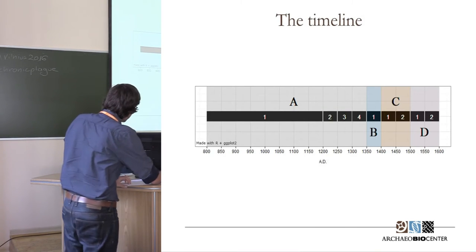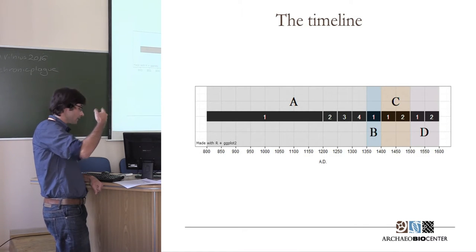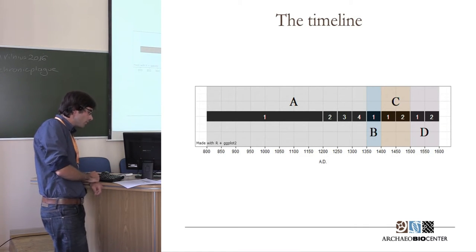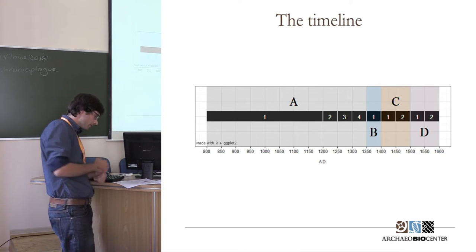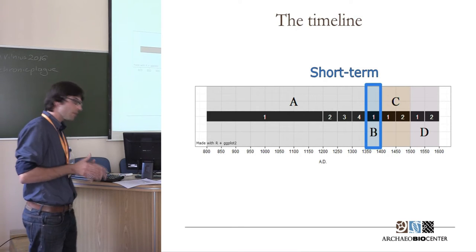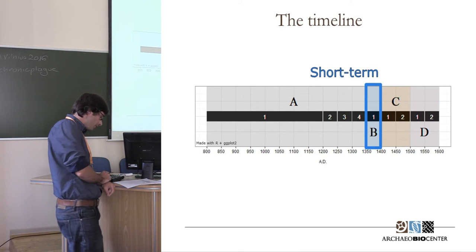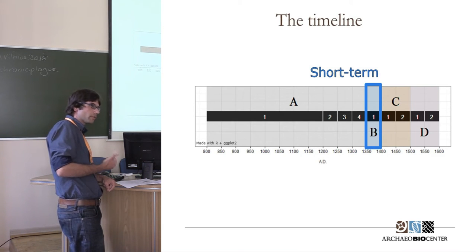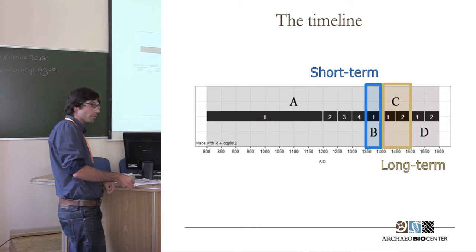We can also see the timeline of the study. We have four main phases — A, B, C, and D — covering the period 800 to 1600. Phase A represents the situation before the Black Death. Phase B is dating in the immediate aftermath of the Black Death, of the first plague wave in the late medieval ages, and represents the short-term effects and consequences of the plague. The subsequent phase C stands for the long-term consequences, if any.